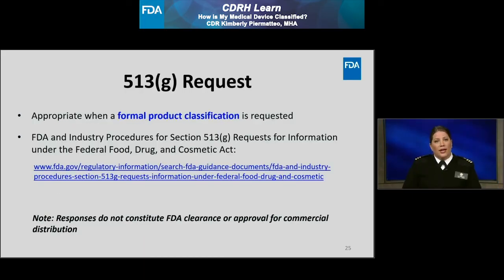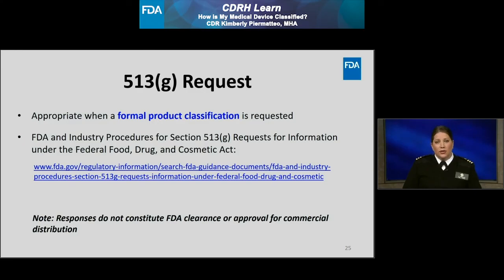If you would like to request a formal product classification from the FDA, you should consider submitting a 513 request. Section 513 of the Federal Food, Drug and Cosmetic Act, or the FD&C Act, provides a means for obtaining the agency's views about the product classification and regulatory requirements that may be applicable to a particular device. For instructions on how to submit a 513 request, refer to the FDA guidance document titled 'FDA and Industry Procedures for Section 513 Requests for Information under the Federal Food, Drug and Cosmetic Act.' Keep in mind, a response to a 513 request does not constitute FDA clearance or approval for commercial distribution — meaning if FDA's response states a 510(k) clearance is required, that clearance must be obtained prior to marketing.